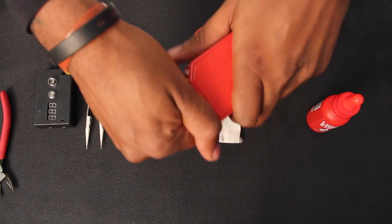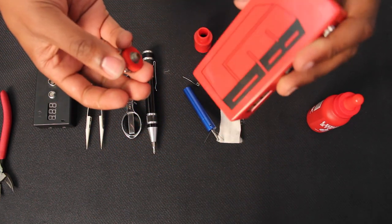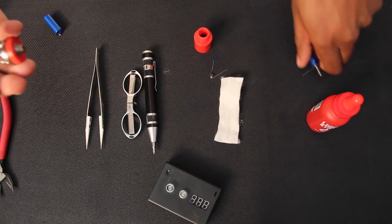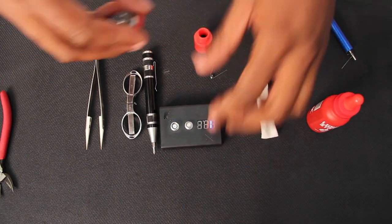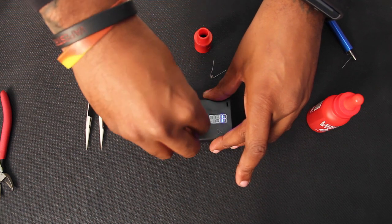So I'm going to take my RDA off my mod right now because the LE80, unfortunately, does not have an ohm meter on there. I want to use my ohm meter for this bad boy. So I'm going to turn my ohm meter on, screw my RDA into the ohm meter.